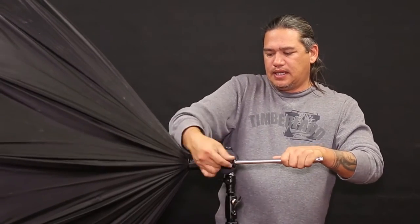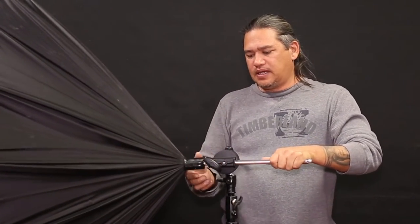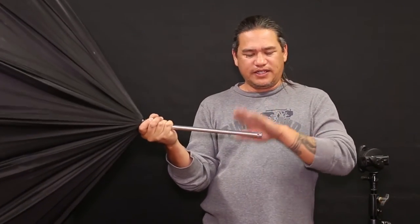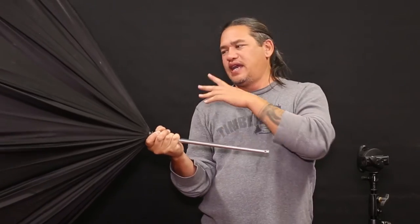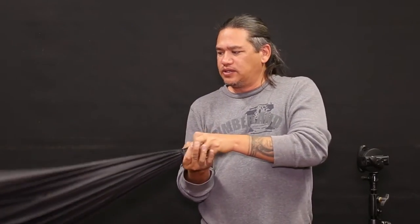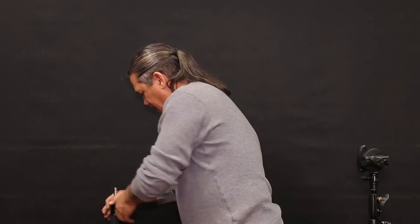Again, this is one of my favorite umbrellas due to the fact of the durability of it. It doesn't have a flimsy little rod. This is your rod system right here and your light mounts to the front. And it closes up real nice and easy. And I'll put it close to the backdrop stand so it doesn't flap open because it'll just flap open.